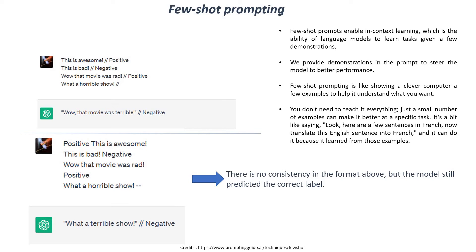Few-shot prompting is like showing a clever computer a few examples to help it understand what you want. You do not have to teach everything — just a small number of examples can make it work very well. It is a bit like saying: 'Here are a few sentences in French — now translate this English sentence into French.' And it can do it because you have already given it inputs to learn from. This is the upgrade of zero-shot prompting: you give inputs and demonstrations, and it performs better.